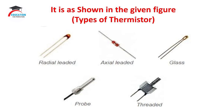There are five types of thermistors. The first type is the Radial-Leaded Thermistor. The second type is the Axial-Leaded Thermistor. The third one is the Glass Thermistor. The fourth one is the Probe Thermistor. And the fifth one is the Threaded Thermistor. In this way, we have completed this sub-topic on thermistors.